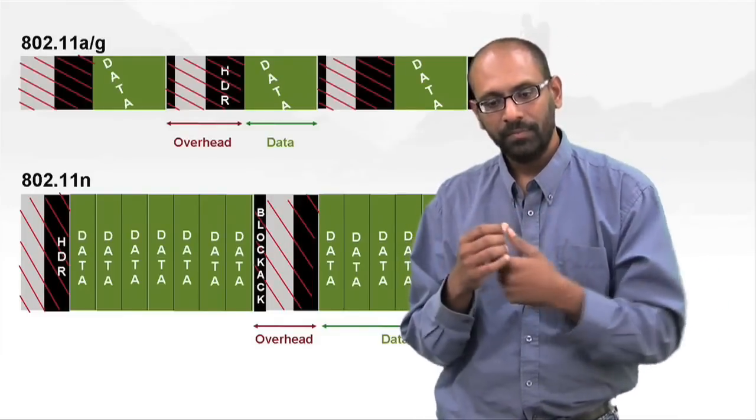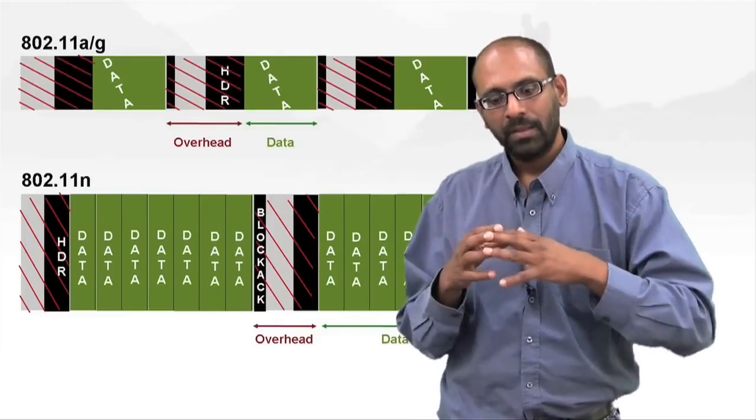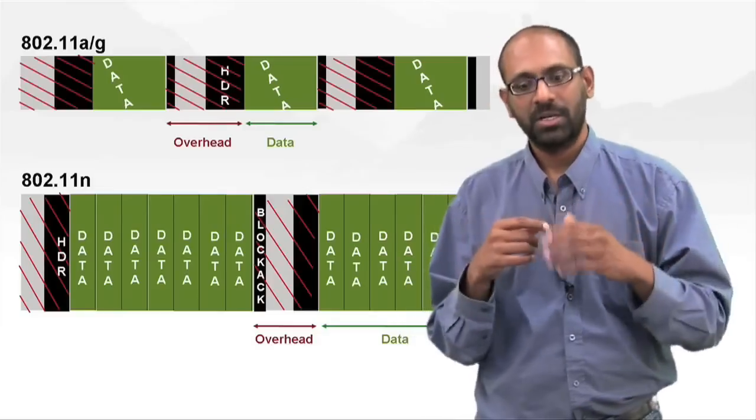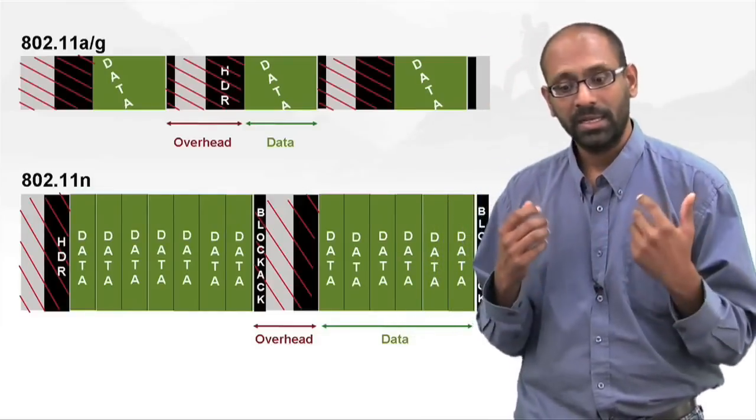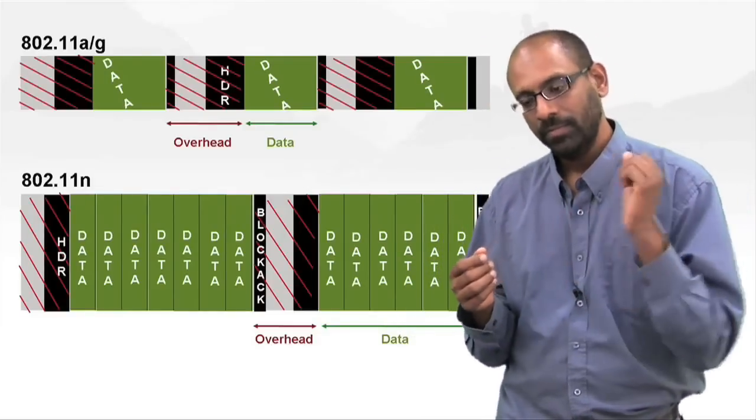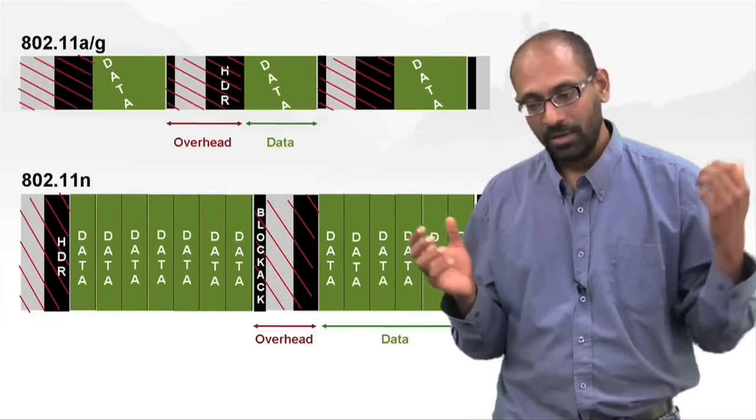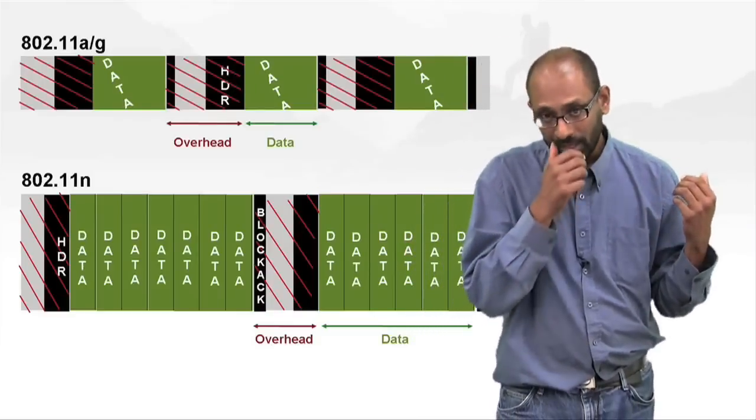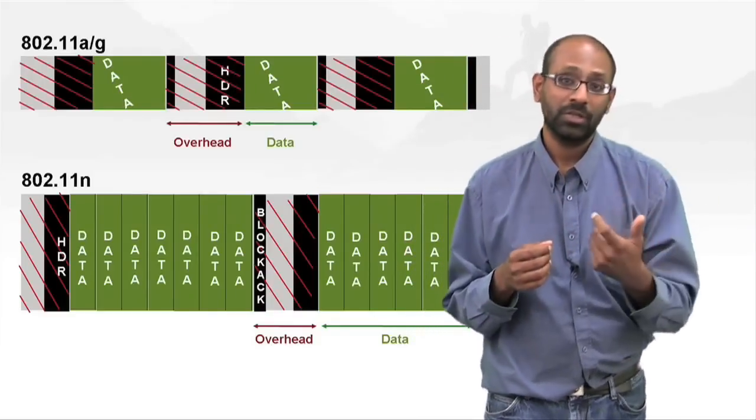When you want to transmit data, you wait for a period of time, then you contend for some amount of time, which is really back off, just like an Ethernet. And then if you succeed, you transmit. And then you wait for an ACK, you're done. And when you get another frame, you do the same thing.